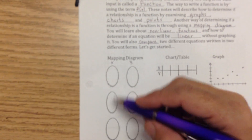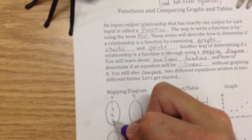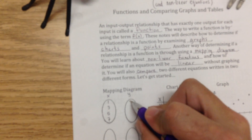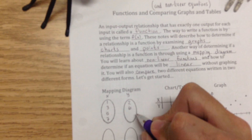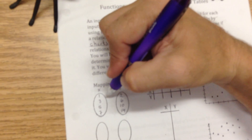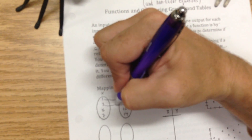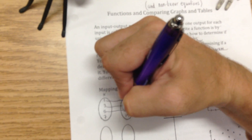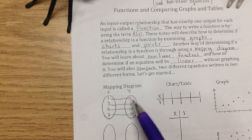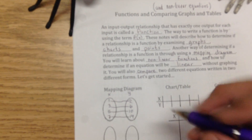We're going to put some numbers in here — pretend like this is a table. So on the input side we put in 1, 3, 5, and 7. The numbers that correspond over here are 2, 6, 10, and 14. The 1 goes with the 2, the 3 goes with the 6, the 5 goes with the 10, and the 7 goes with the 14. You can probably tell that's 2 times x. Since every one of these numbers goes to only one output, this is a function.